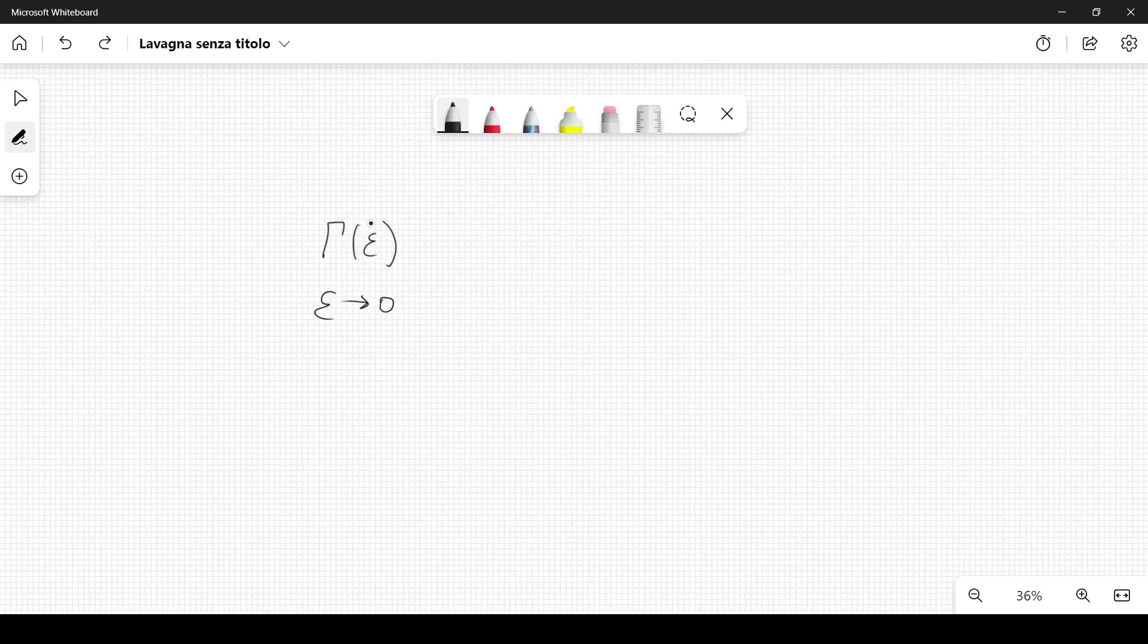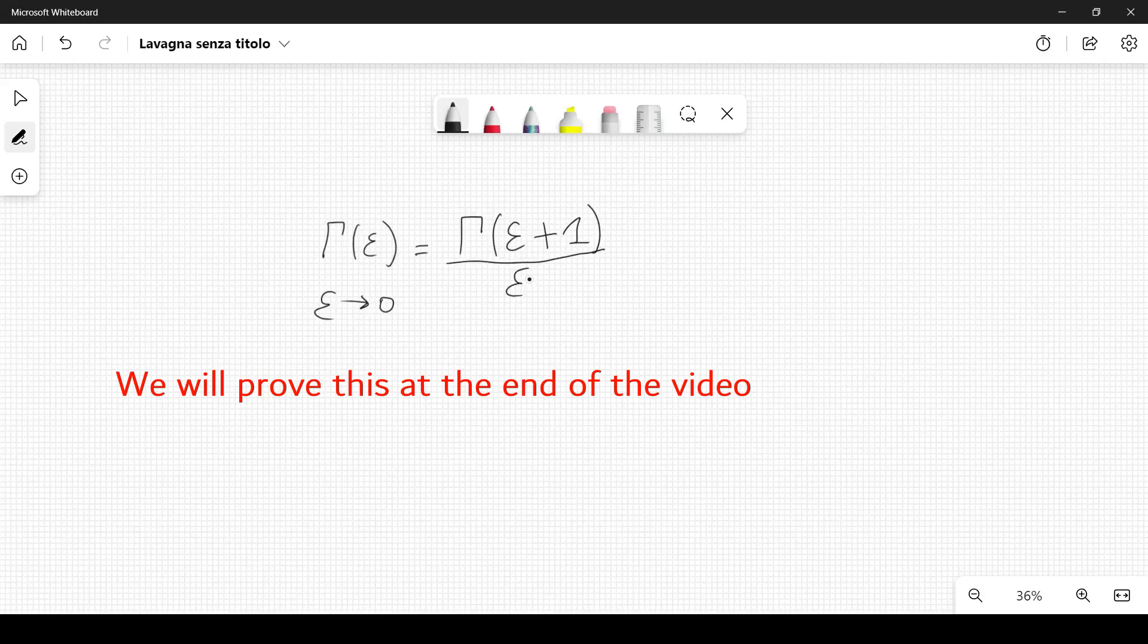But for now, it is just a real positive variable. According to the properties of the gamma function, it is very easy to prove the following property: we can write it as gamma of epsilon plus 1 divided by epsilon. This is a very simple property of the gamma function.